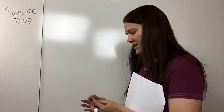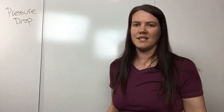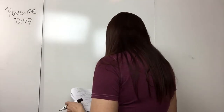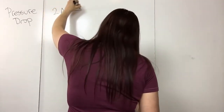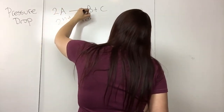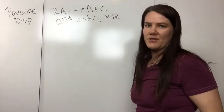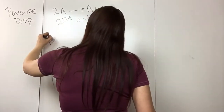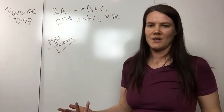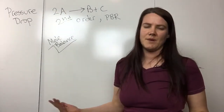The way we've been writing the equations, we've already been including the term for the pressure drop for the most part, but then you say that it's equal to one if there's no pressure drop, so it just goes away. First of all, let's say that we have the following reaction: 2A → 2B + C. Let's say it's second order and there's a PBR. These problems are pretty much set up the same every time: mole balance, rate law, stoichiometry, and then combine and solve with whatever method you want to use.